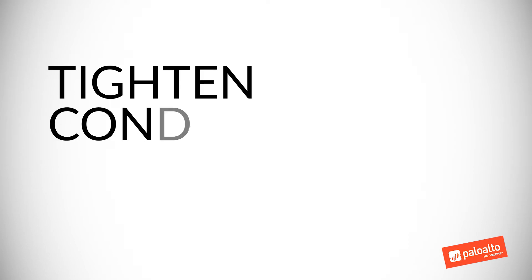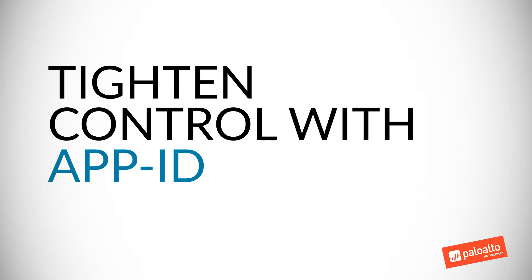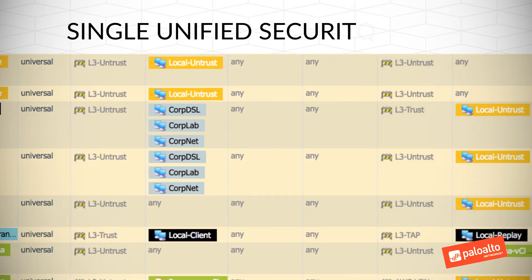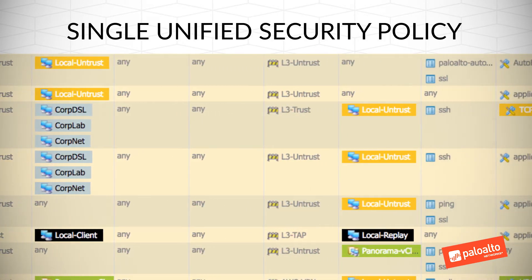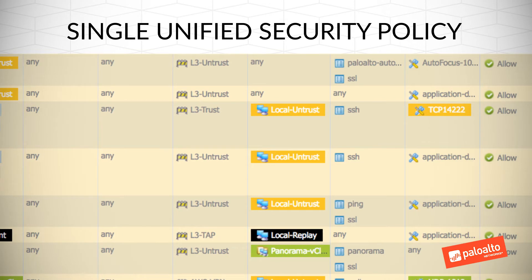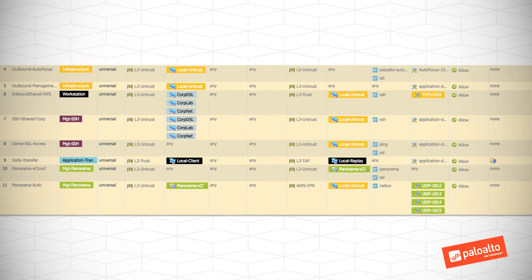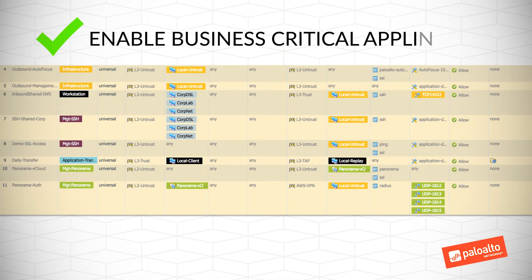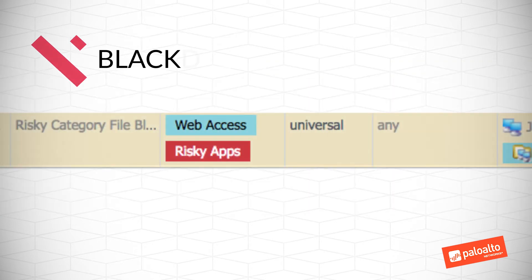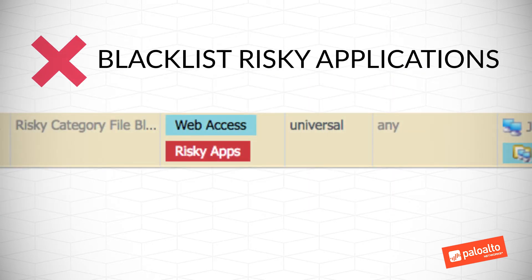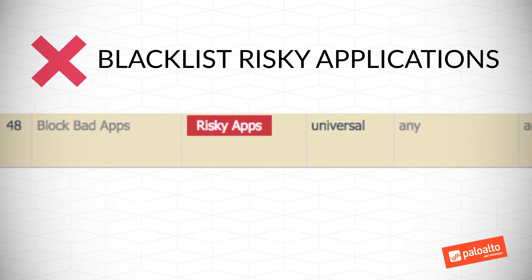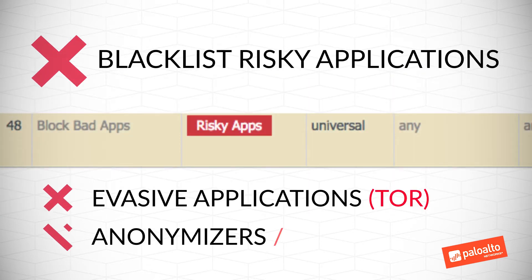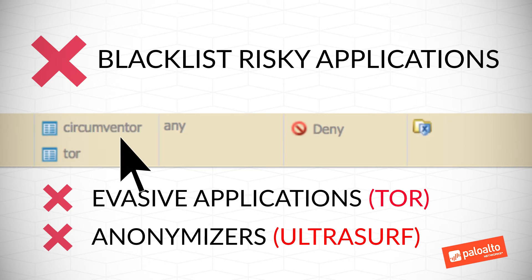Tighten control with AppID. AppID is part of a single unified security policy, as you see here. This is how your policy will look. For example, you will safely enable business-critical applications and blacklist risky applications, including peer-to-peer applications, evasive applications like Tor, and anonymizers like UltraServe.